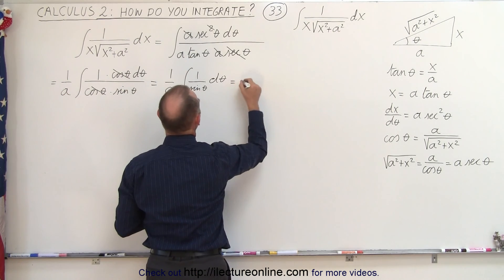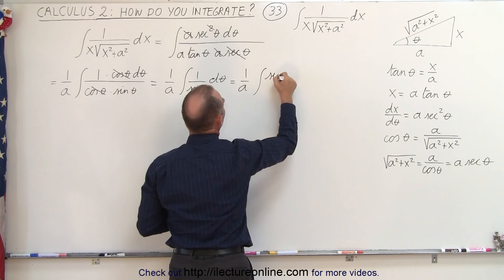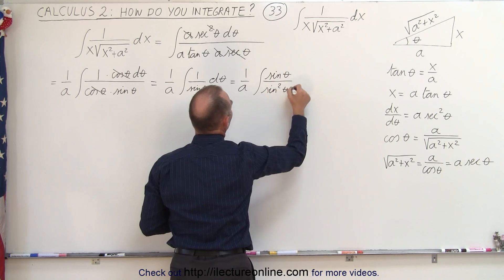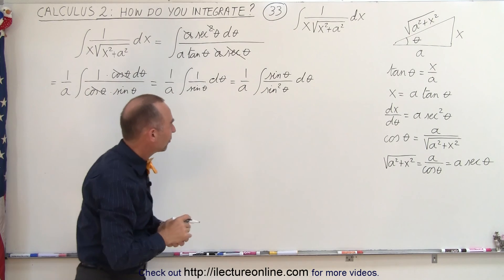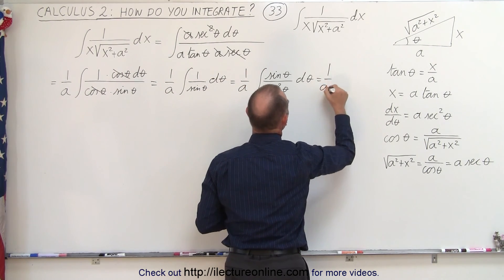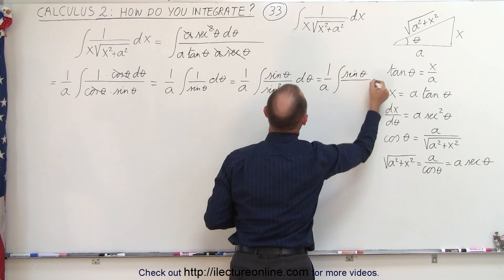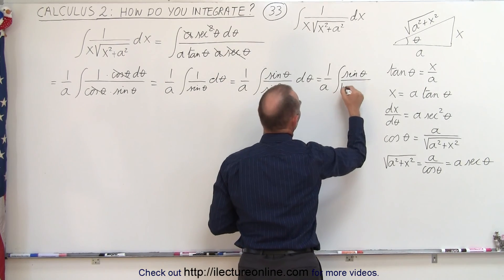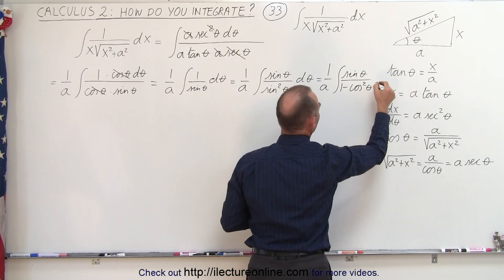So this can now be written as 1 over a times the integral of sine of theta divided by sine squared of theta dθ. You can rewrite this as 1 over a times the integral of sine of theta in the numerator divided by 1 minus cosine squared of theta dθ.